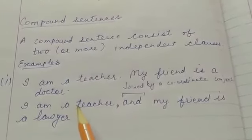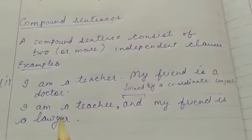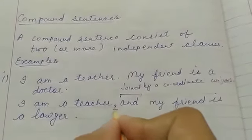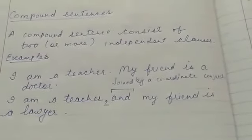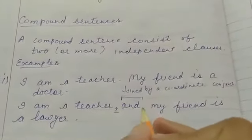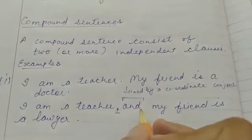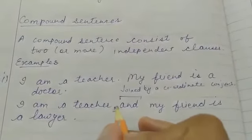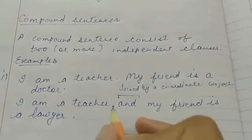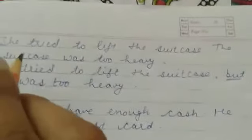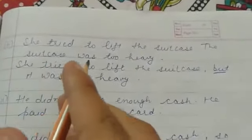One important thing: notice this comma before the conjunction. Don't forget to use this comma before the conjunction — it is a rule of punctuation. You must separate the two sentences with a comma in compound sentences.